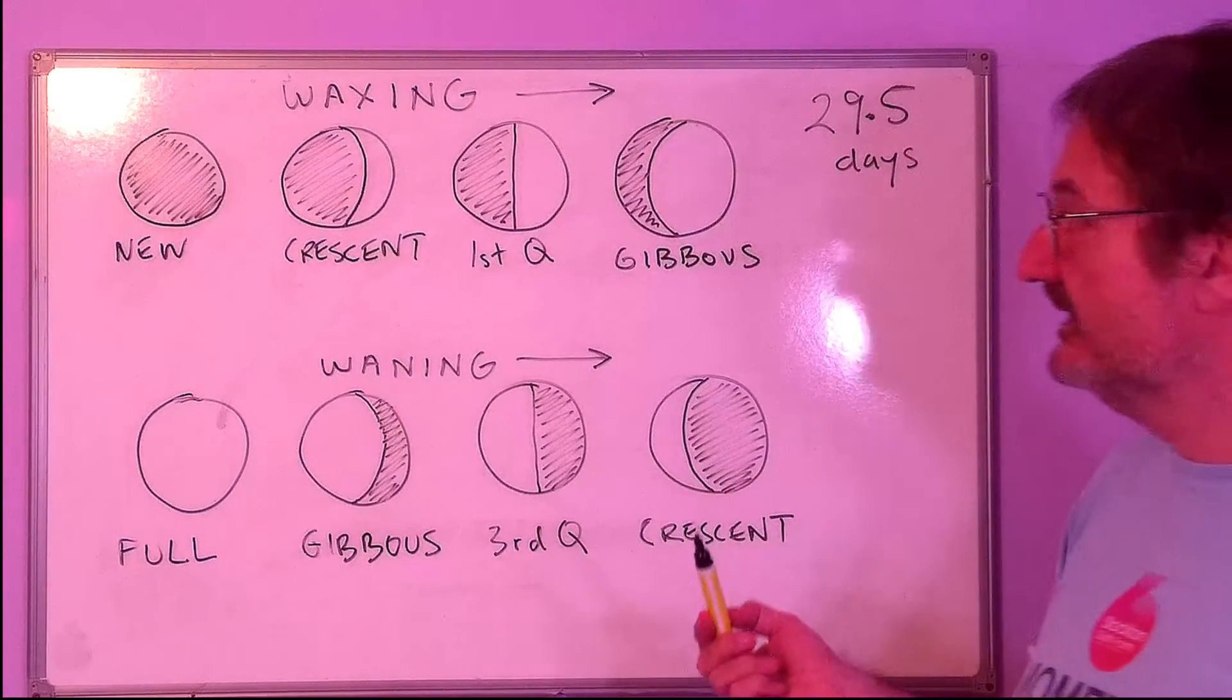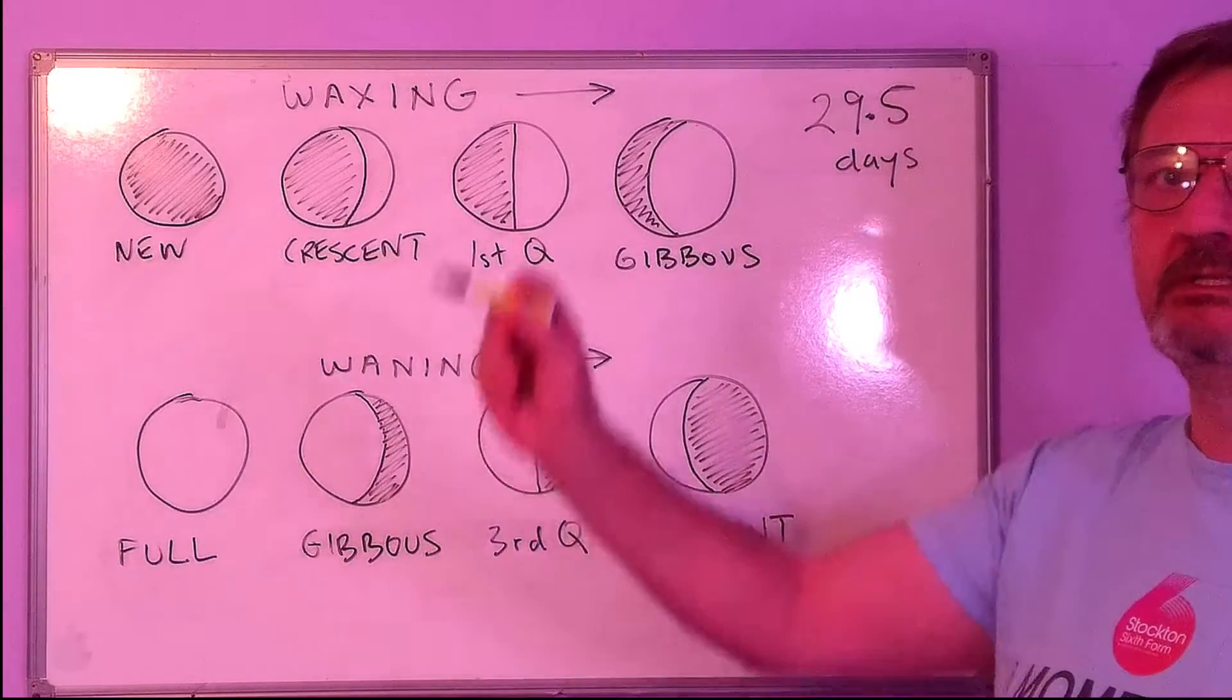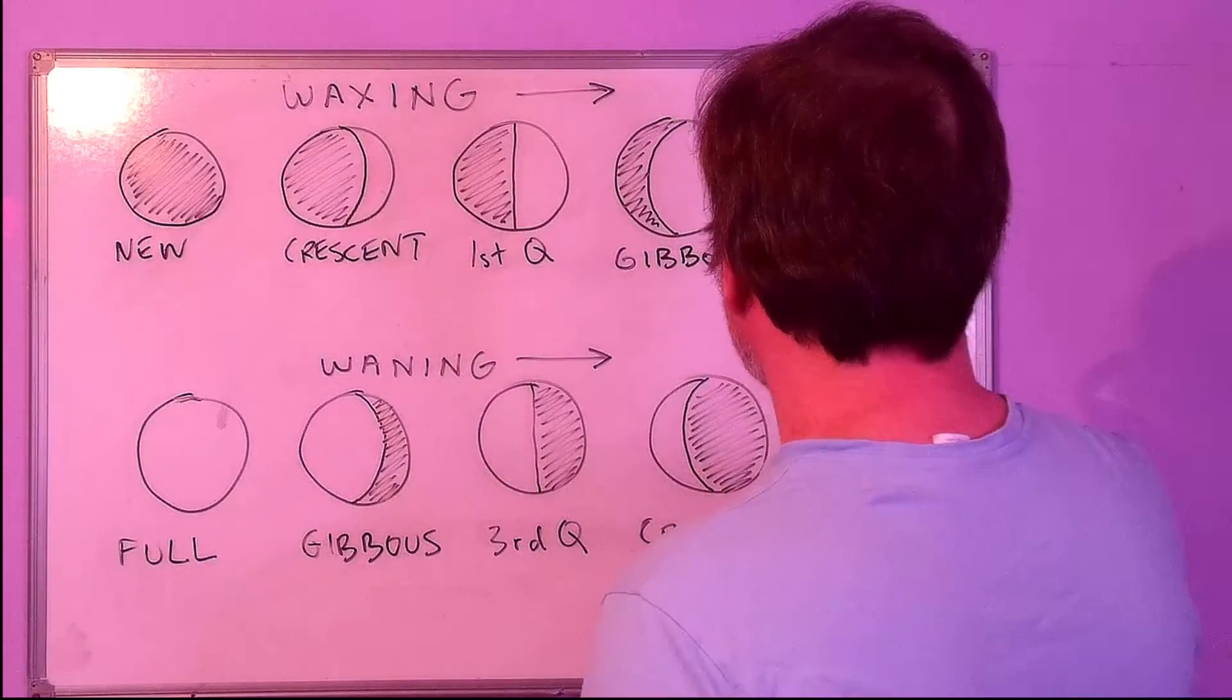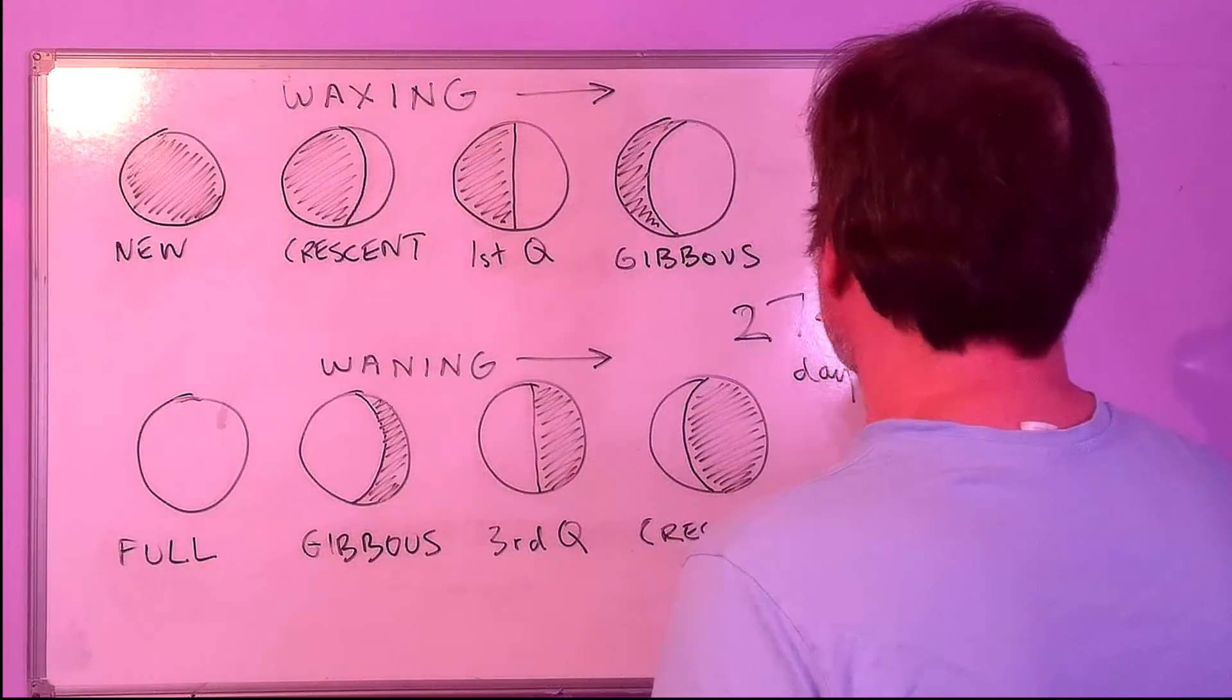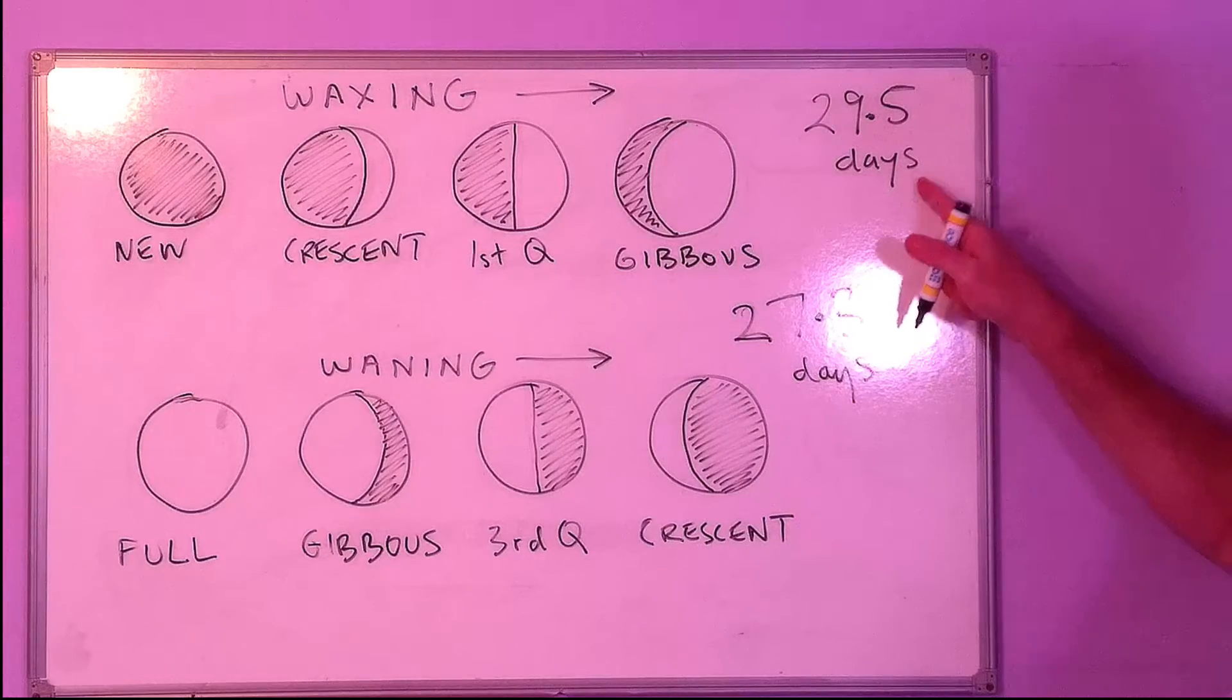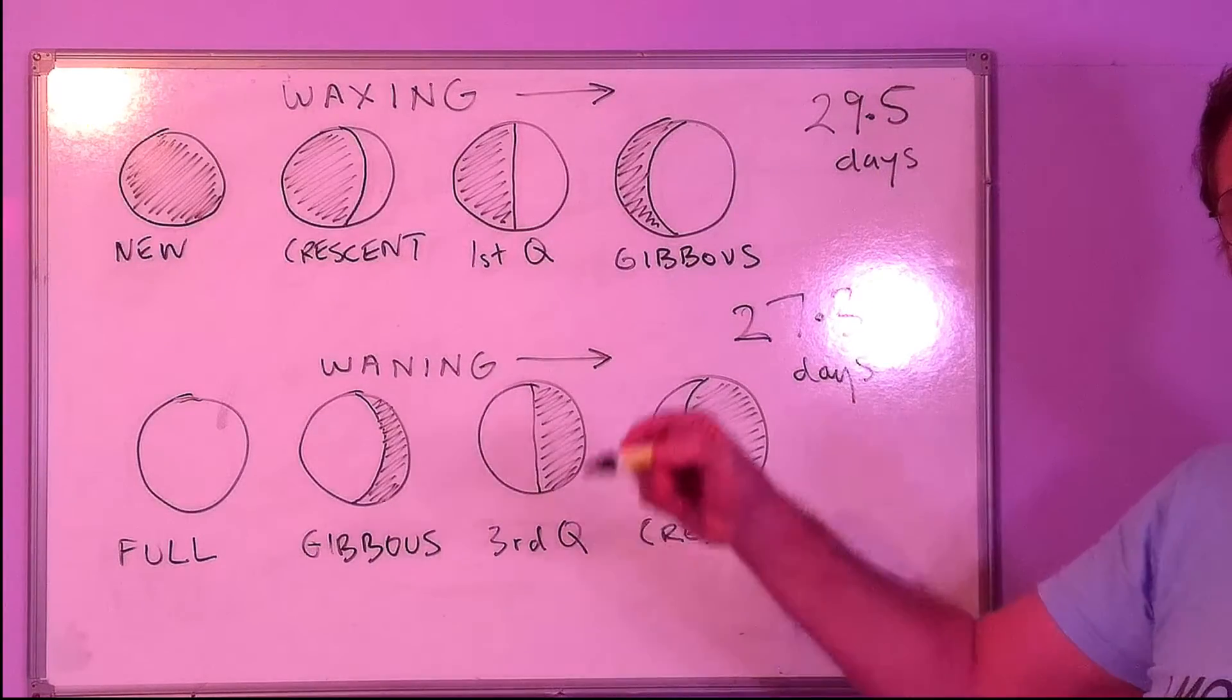What is a little bit trickier to explain is why the time it takes the moon to go round the earth is 27.3 days. So why does the lunar phase cycle take a couple of days more than the time it takes the moon to go round the earth?